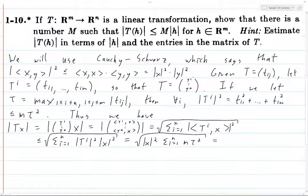All right, and then, so this is just going to be the square root x squared, then we're adding up m times tau squared n times, so we get n m tau squared, square root, and then we take the square root of everything, and so then this is equal to square root of n times m times tau times the norm of x.